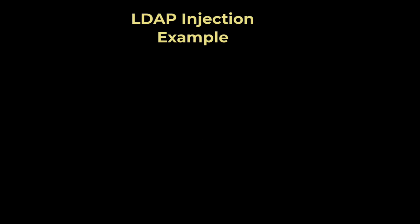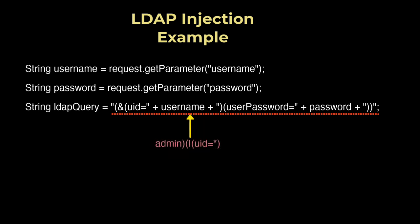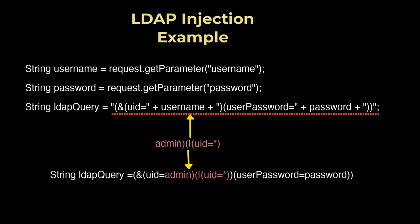Consider a web application that uses LDAP to authenticate users. The application takes a username and password from a login form and constructs an LDAP query to verify credentials. The LDAP query string is constructed using user-provided input for the username and password fields. An attacker can inject additional LDAP query components in the username field, producing a query that always returns true, matching any user, bypassing authentication, and granting the attacker access to the system.